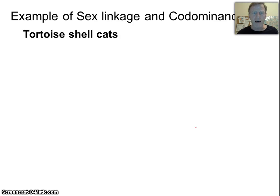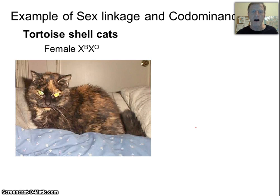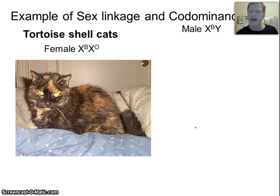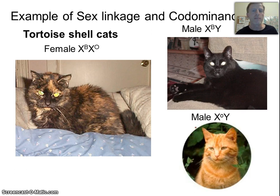An example of this is tortoiseshell cats. It turns out black and orange fur color in cats is carried on the X chromosome. A female cat with the B allele and an orange allele — they're co-dominant — will look like a tortoiseshell. Males can't have that color. A male could have the B allele and be a black cat, or the orange allele and be an orange cat. But you couldn't see a male cat with both, because male cats only have one X chromosome.